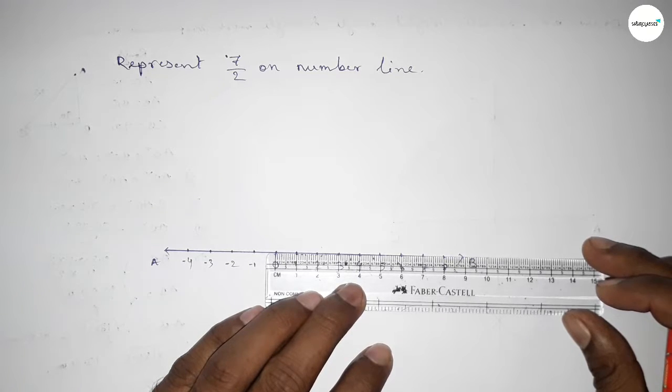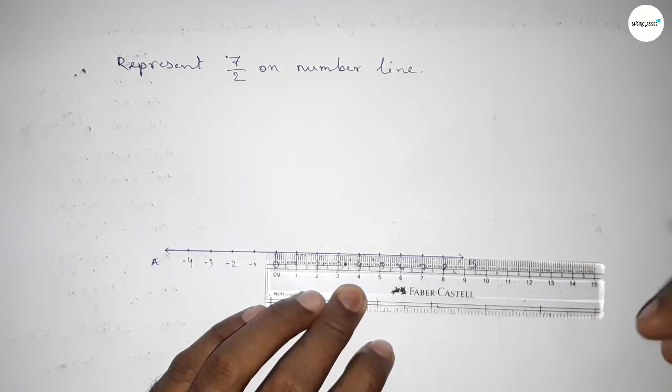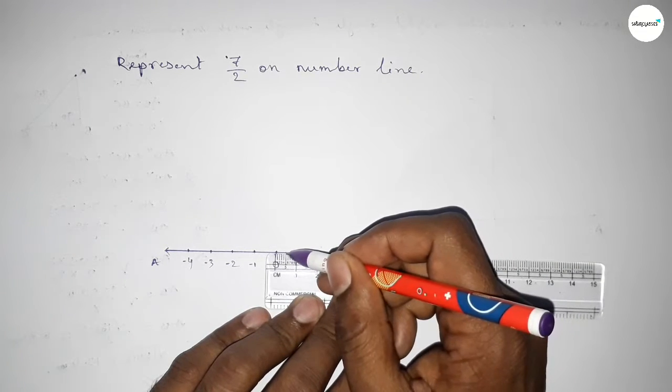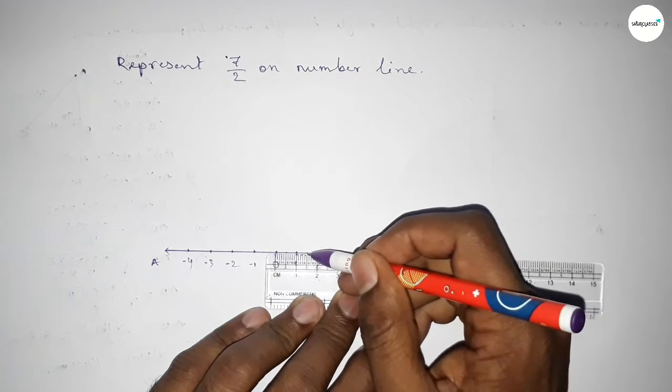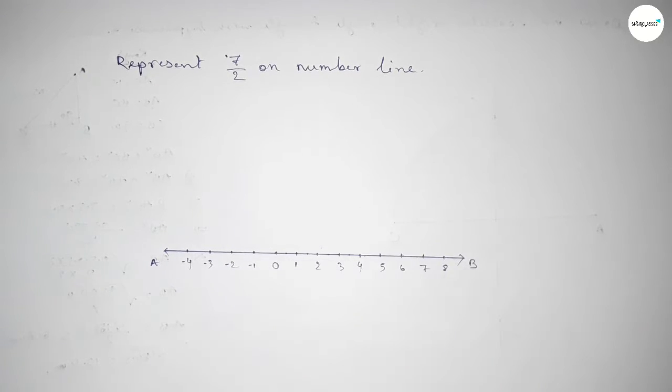Now we have to divide the distance between zero to 1, 1 to 2, 2 to 3, etc., by 2. So this is half and this is also half, this is also half, and this is also half between 2 to 3.